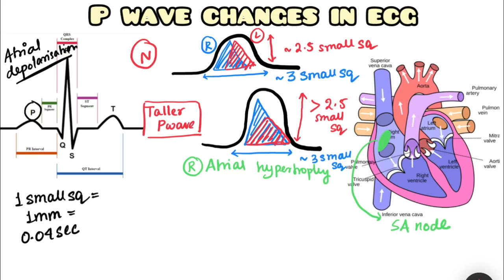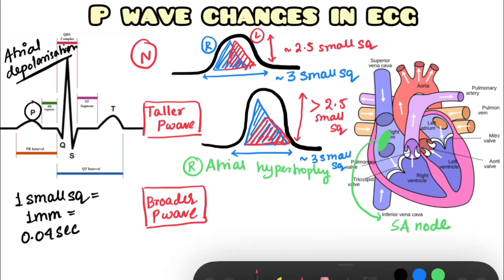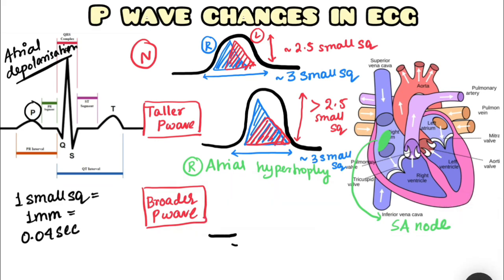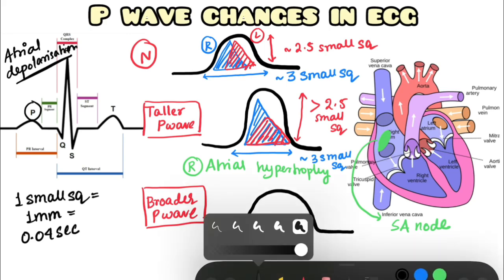We can get another type of P wave abnormality, that is a broader P wave. In broader P wave, the abnormality we see is that the P wave is broad.